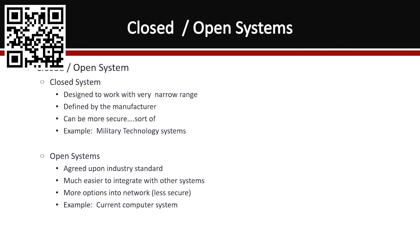Closed systems can be more secure because they are independent — you don't have the same issues as with a highly interconnected system. The downside is that because they're so unique and niche, they're often not updated at the same level a commercial-grade system would be. When I flew B1s, we had systems worth like a million dollars for one box doing a very specific thing — made specifically for the B1, not something you could use elsewhere. That's what we call COTS — commercial off-the-shelf — versus those closed systems.